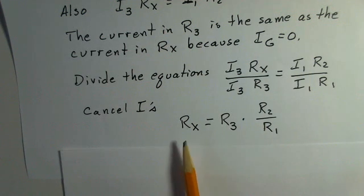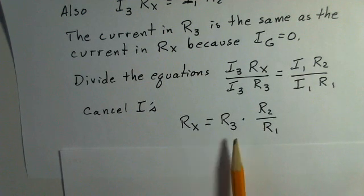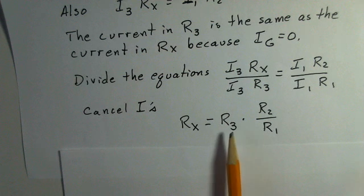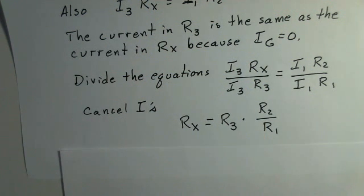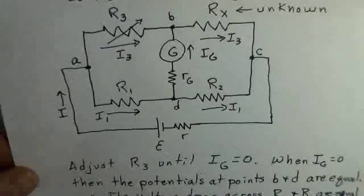Our unknown resistance is simply R3, this is our variable resistor, multiplied by R2 over R1. Let's come back and look at this circuit again.